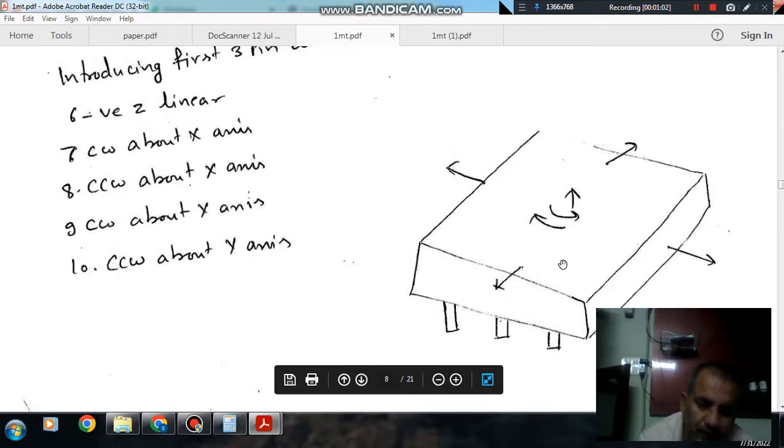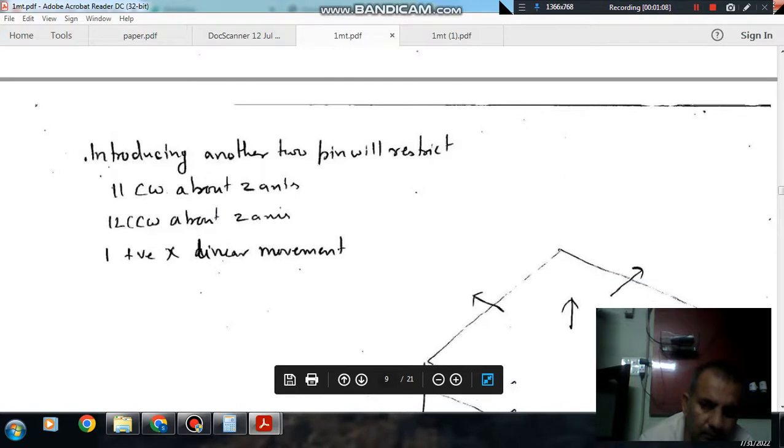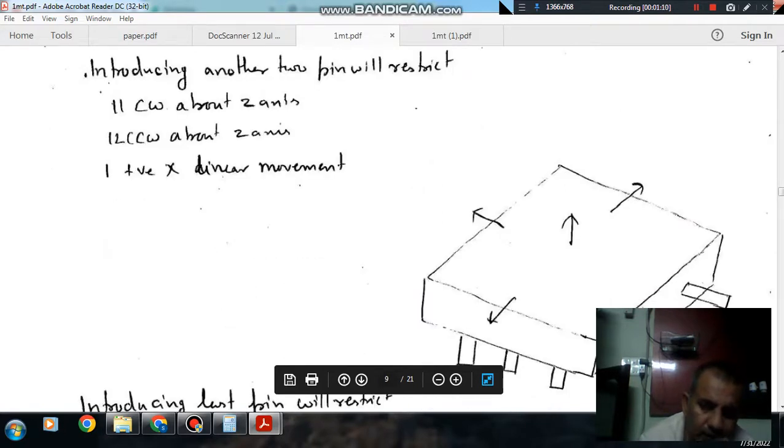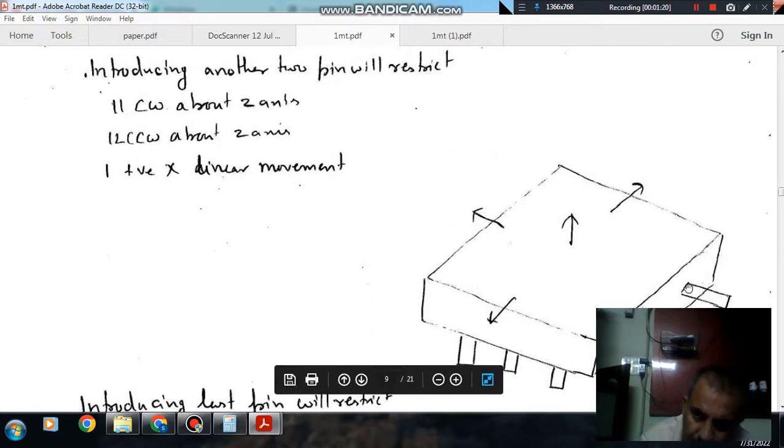5 degrees of freedom is restricted by first 3 pins and by another 2 pins the moment about z-axis is also being restricted because it will not go like this.